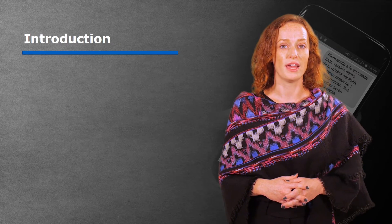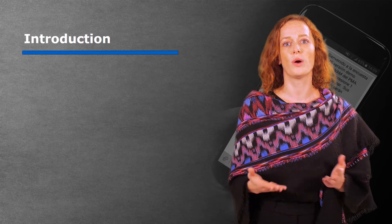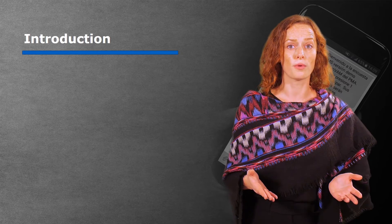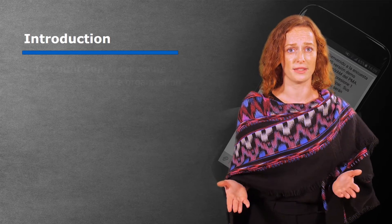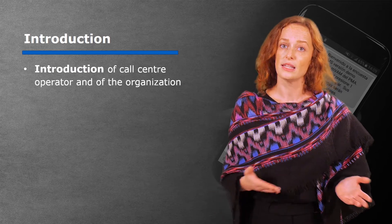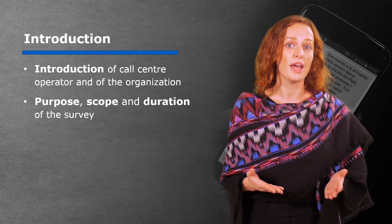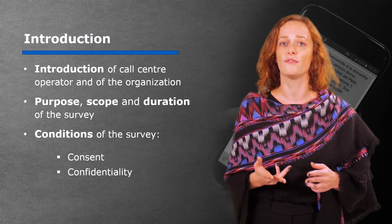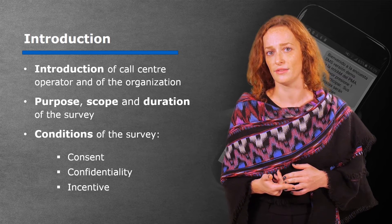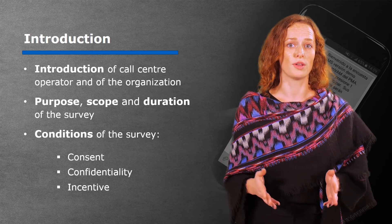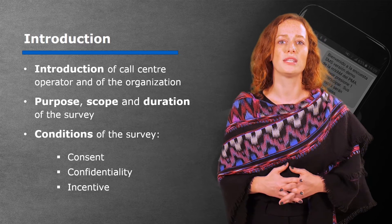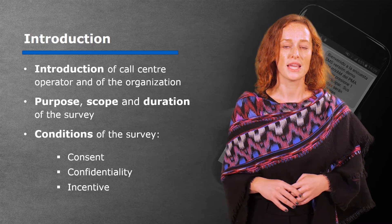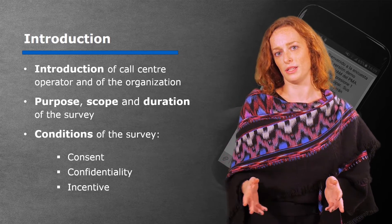The first part of any questionnaire is a brief introduction and a request for the respondent's consent to participate. Here, the call operator, SMS, IVR or chatbot message introduces themselves, WFP, the purpose, scope, and duration of the survey, as well as the conditions, such as consent, confidentiality, and incentives. This is a very important part of the questionnaire, as it's meant to establish rapport with the respondent and create a sense of security. It also confirms their interest and availability to participate.